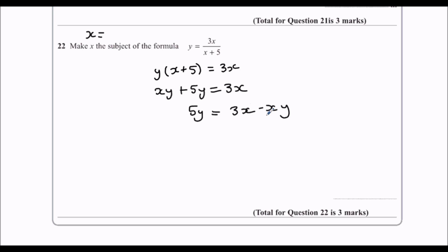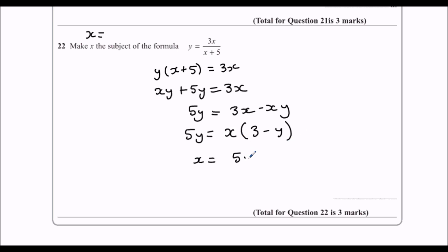Now I need to get x by itself with only one x, so I'm going to factorize — take x out and have (3 minus y) inside a bracket. Then the last step is to divide by (3 minus y), and we have made x the subject.